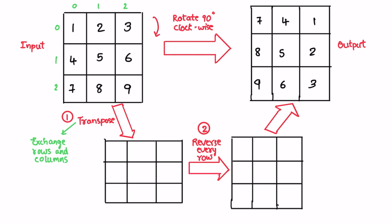Let's take the example given to us. We are given the input array and we have to get the output array. We have to turn this input array 90 degrees in the clockwise direction to get the output array.